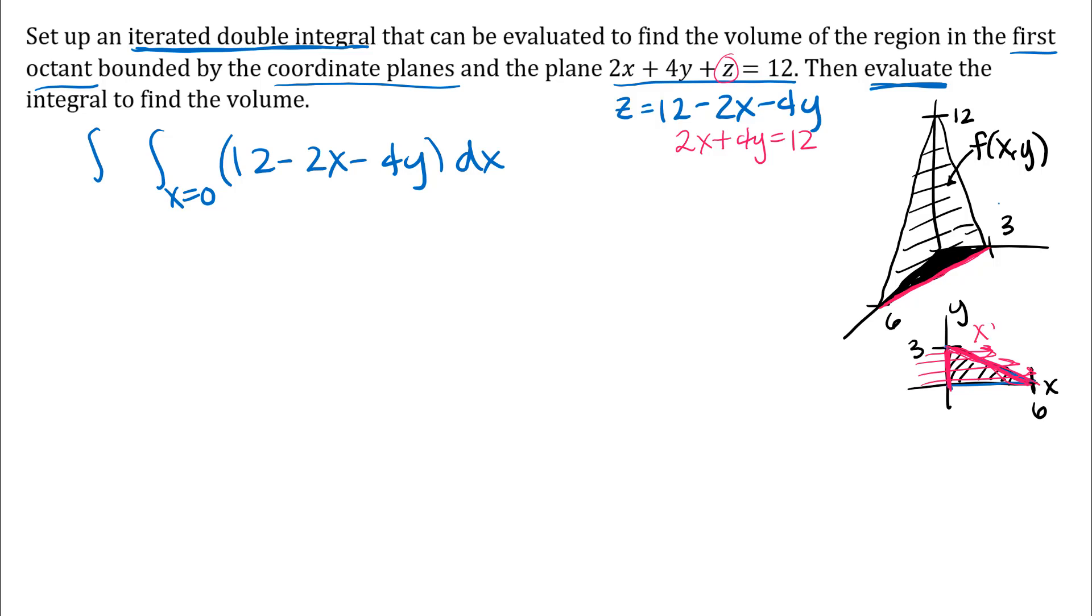So x plus 2y equals six is the equation of that line. Going through in the direction of increasing x, I enter at x equals zero and leave at x equals six minus 2y - I have to solve for x. Then I need y limits of integration. Looking at my picture, y goes from zero to three.